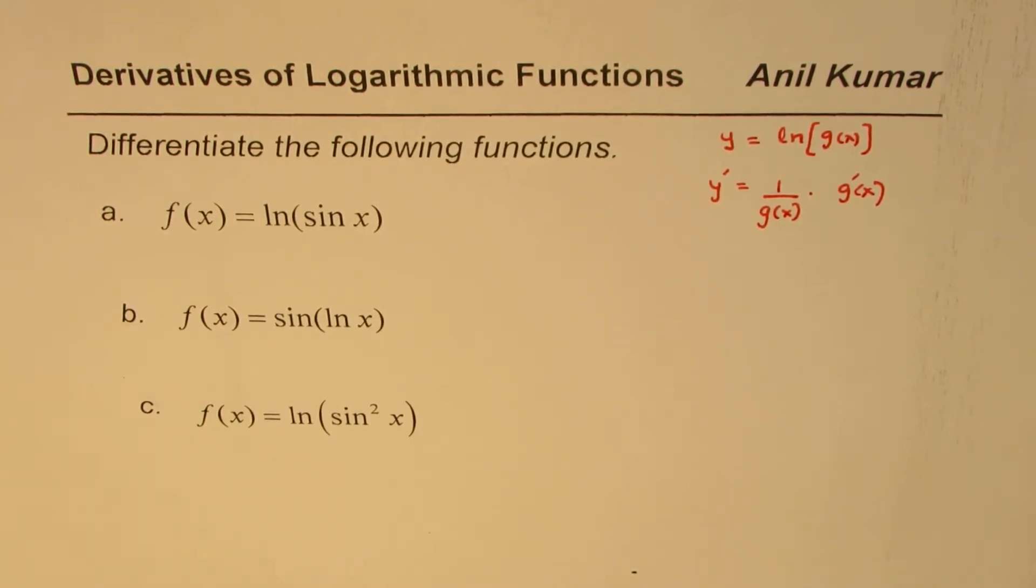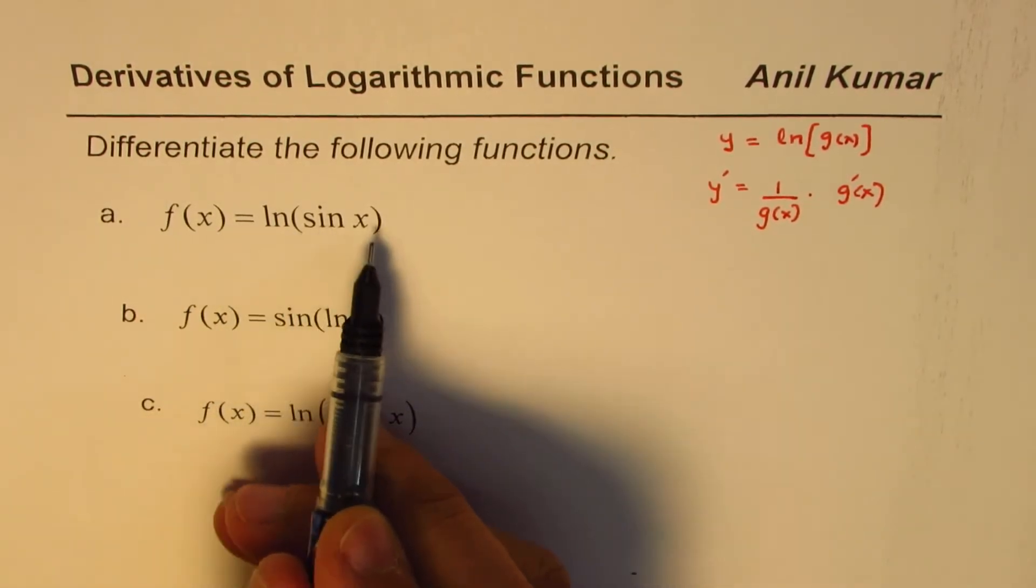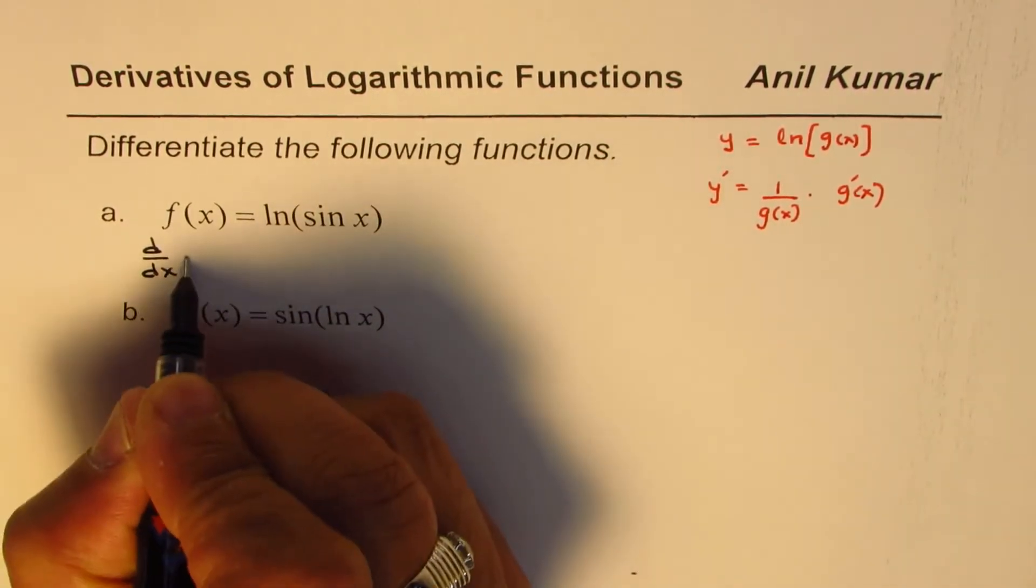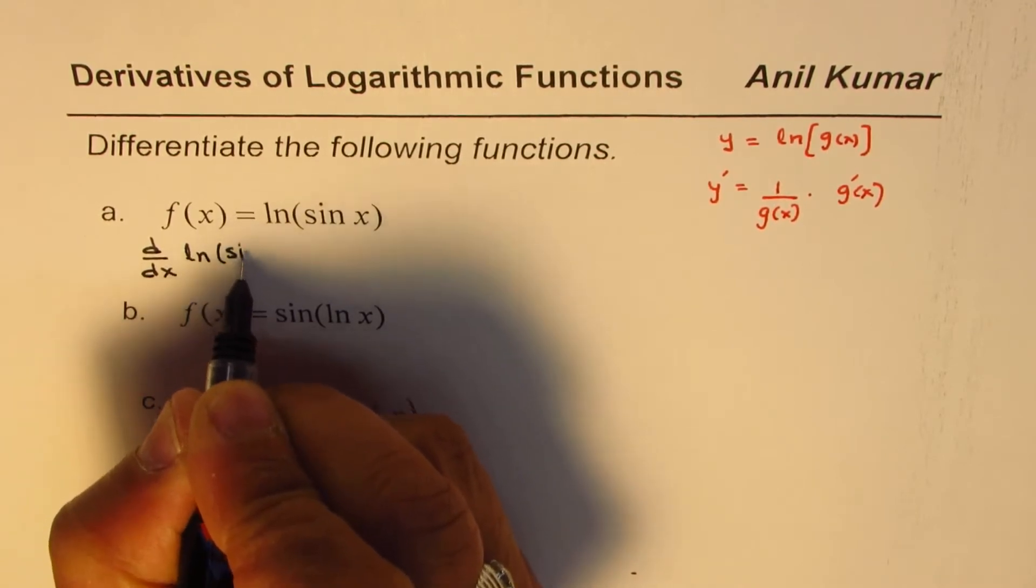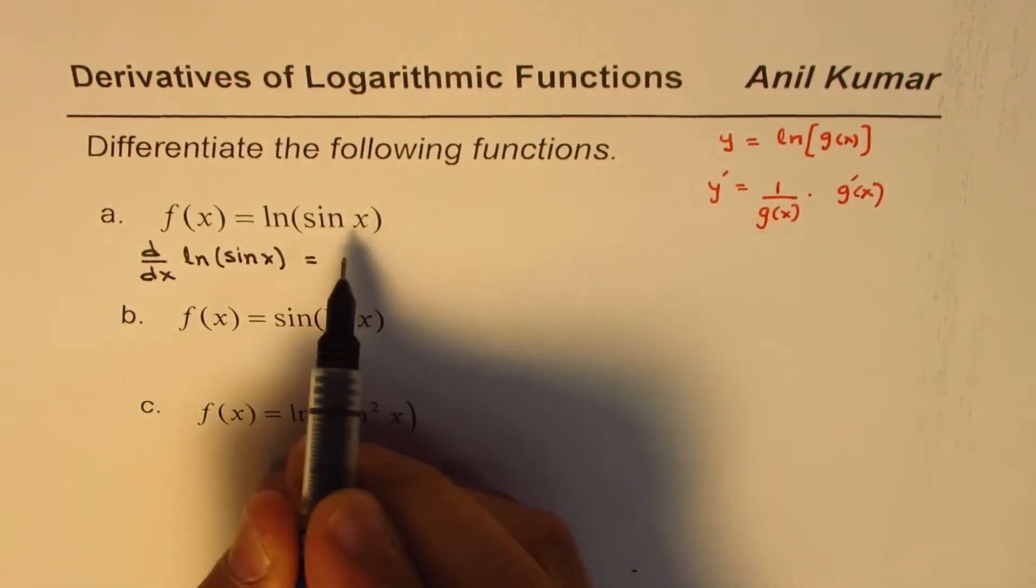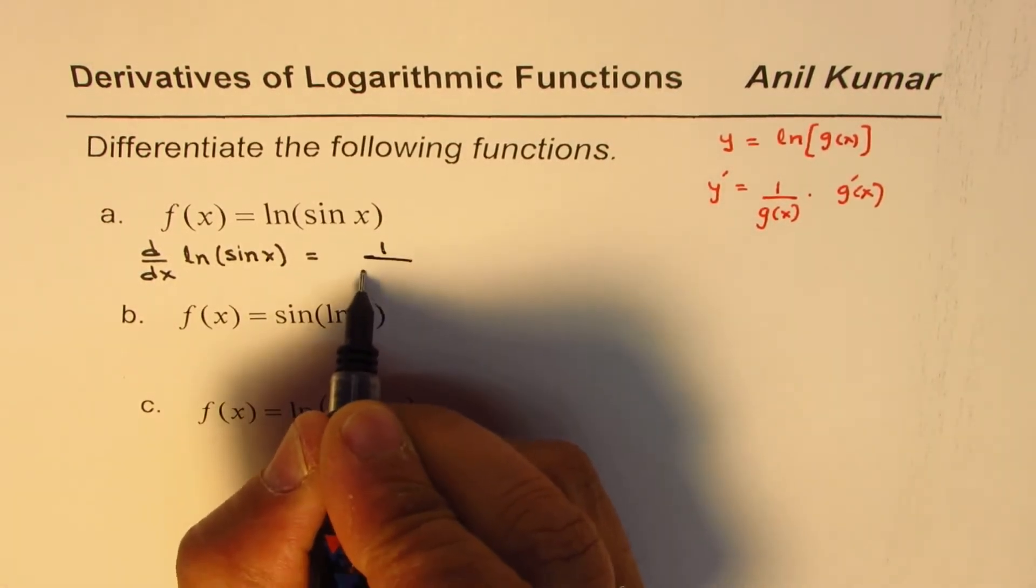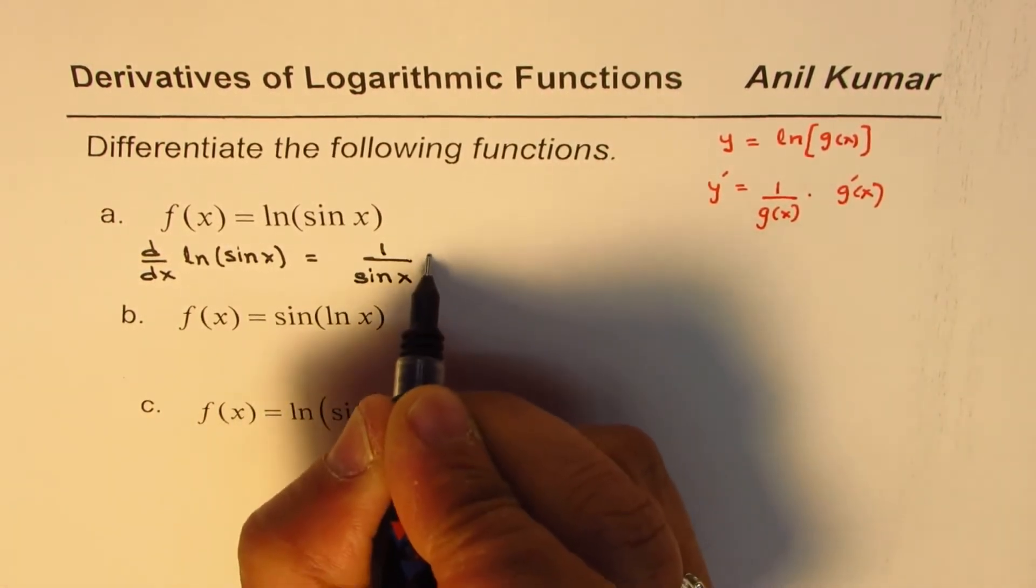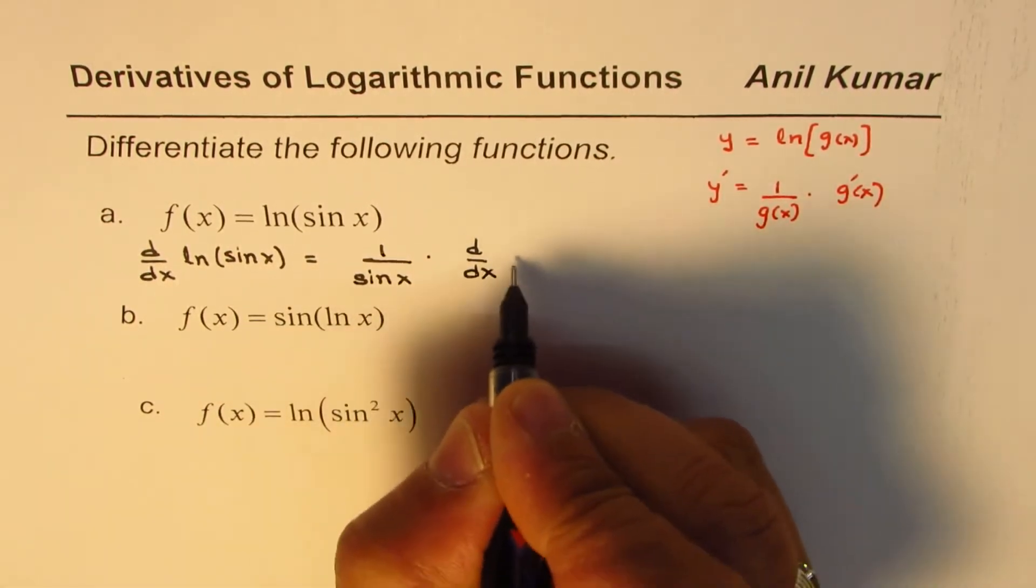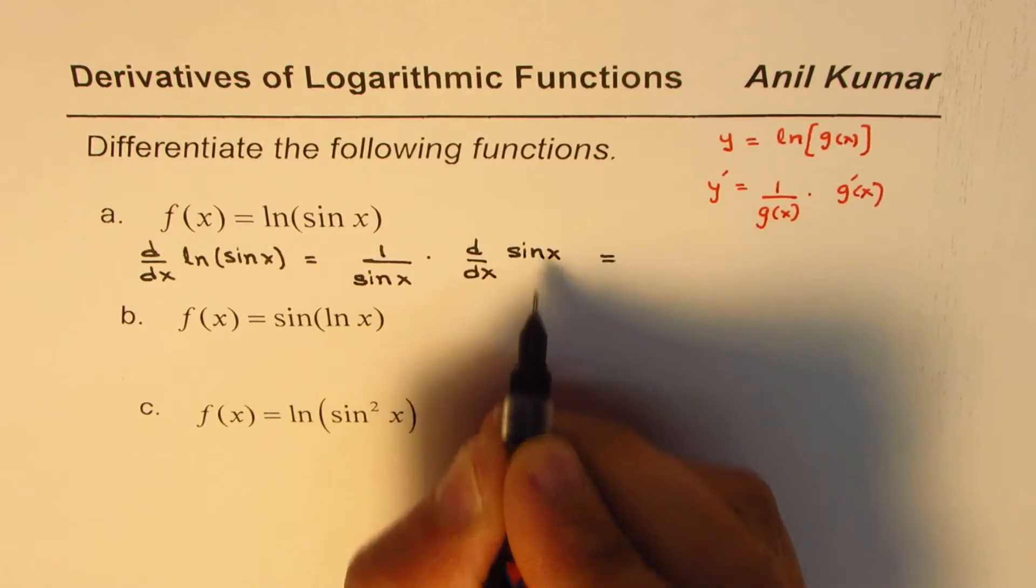Let's begin from the very first one. F of x equals ln sine x. So derivative d dx of ln sine x will be, applying the formula, 1 over sine x times derivative of sine x. So we get 1 over sine x times d dx of sine x. As you know derivative of sine x is cosine x.